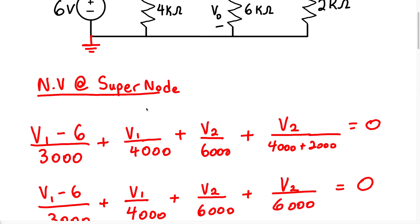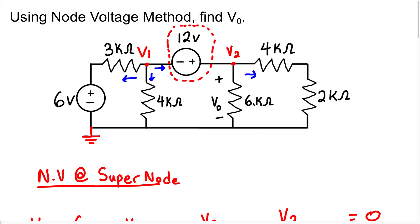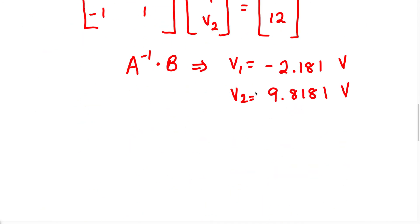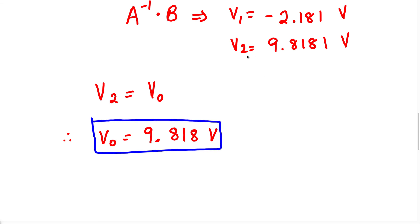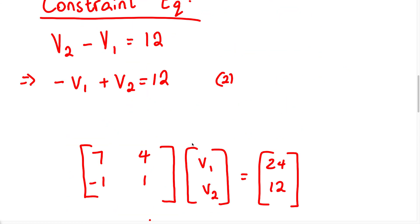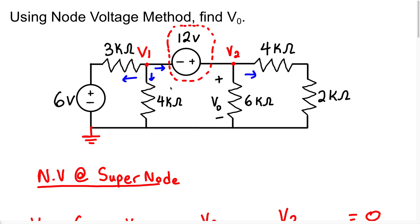They want us to find the voltage VO, which is the voltage across this 6k resistor. As we can see, if we know the value of the voltage at node 2, we also know the voltage across this 6k resistor — because the voltage at node 2 is the same as the voltage across the 6k resistor, which is labeled VO. Therefore, VO equals V2 equals 9.818 volts. This was a supernode problem because we had a sole voltage source between two essential nodes with unknown voltages at both.